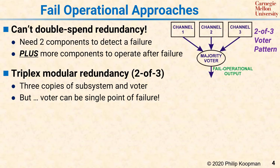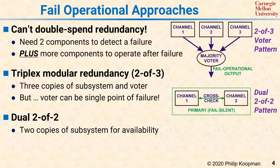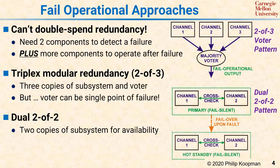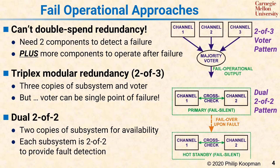A commonly used approach to get past the voter bottleneck is the dual two-of-two approach. In this system, a two-of-two cross-checked pair is used as the primary control. If there is a fault, the entire two-of-two block will shut down, so you need a second block — also a two-of-two block — as a backup. Each of the two two-of-two blocks does internal fault detection, so each block is failed silent. If one block fails silent, the other can take over. This pattern is commonly used in rail switches, and in practice the primary and secondary blocks are swapped periodically to make sure both blocks are still working.